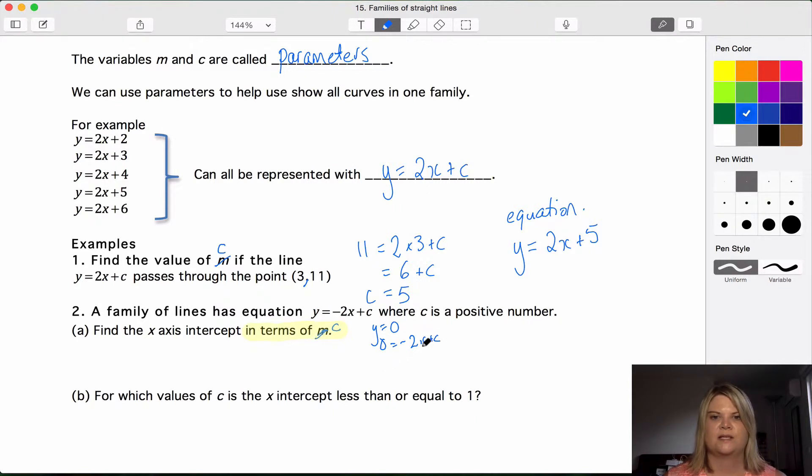So we're looking for the x-intercept. So we're looking for x equals. So we need to rearrange this so that we get x by itself. Negative 2x. And I'm just going to go over this way. You would normally work down the page. Negative 2x equals negative c, negative c on negative 2 equals x. x equals c on 2 or half c. Either of those is acceptable. Find the x-axis intercept, x in terms of c. x equals a half c. Done.